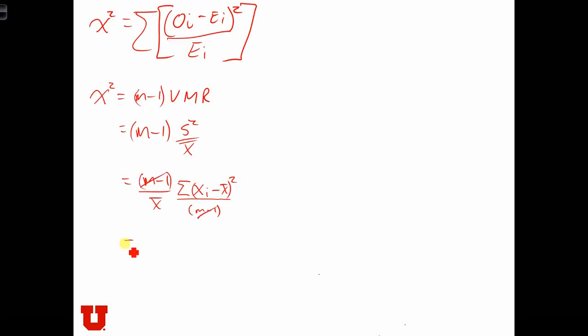What we're left with is the sum of (Xi minus X-bar) squared over X-bar. Because X-bar is the same—X-bar is essentially a constant—we can put it inside the summation. So we get (Xi minus X-bar) squared over X-bar.